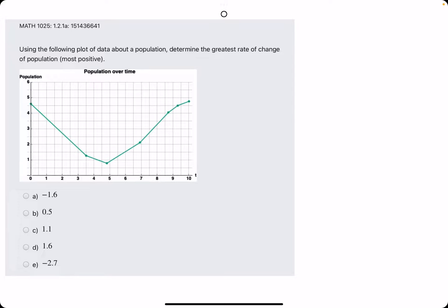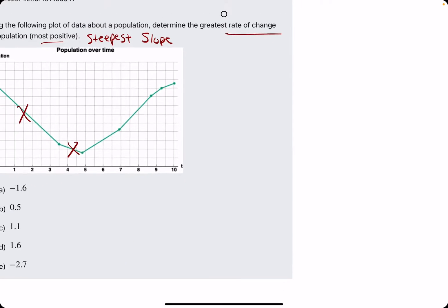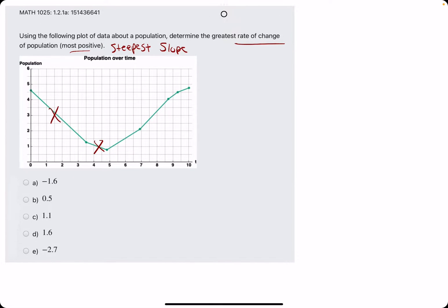In this problem, we are looking for the segment on this graph with the greatest rate of change. In other words, the most positive or the steepest positive slope. We can eliminate any negative sloped segments, so that just gets rid of those first two. Now the remaining four segments are all positive. We are looking for the steepest one.